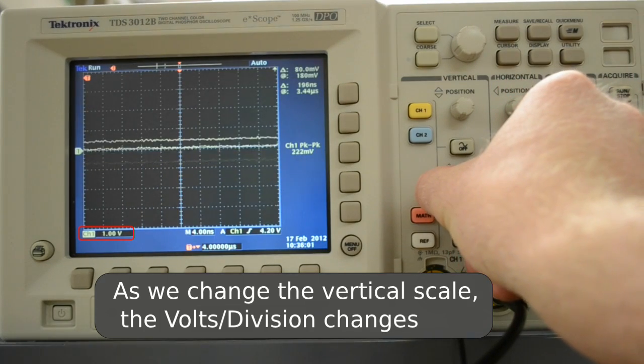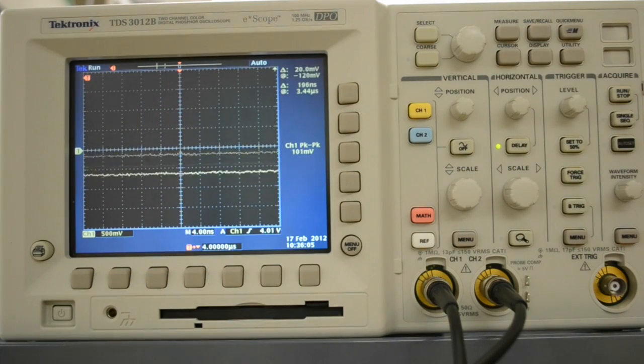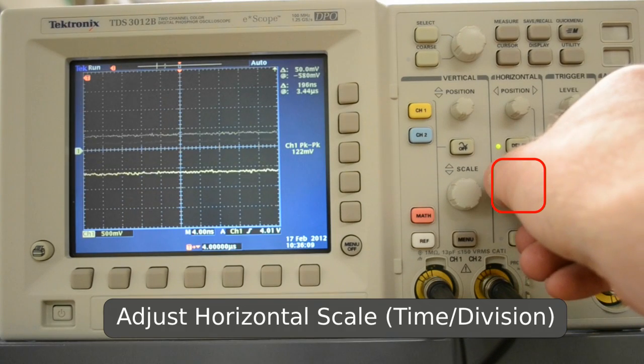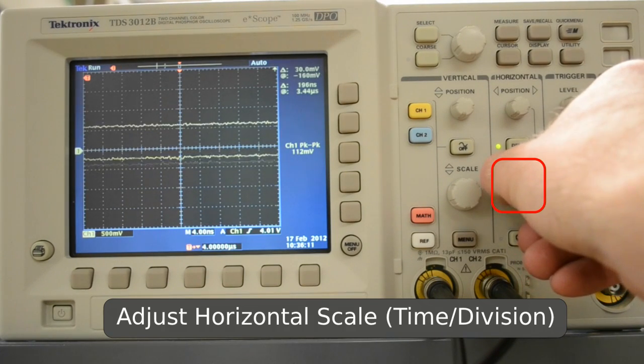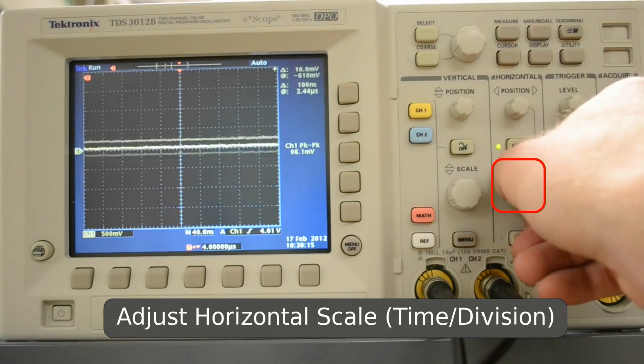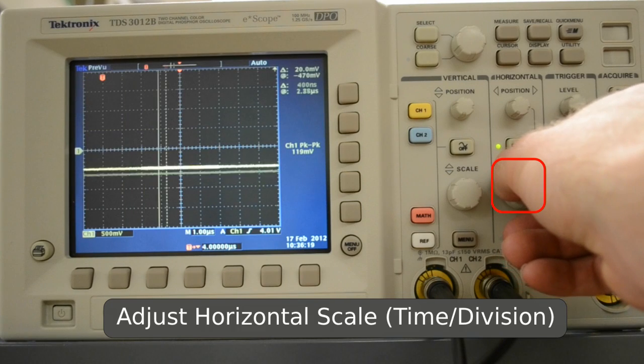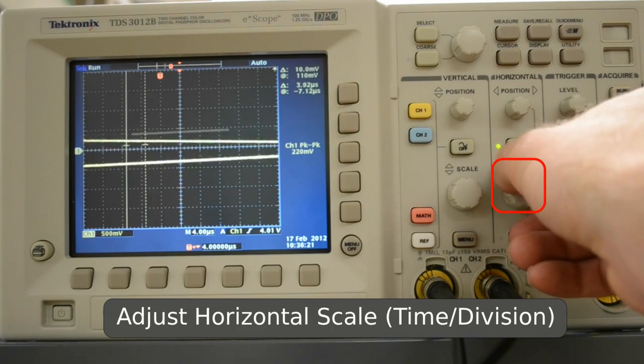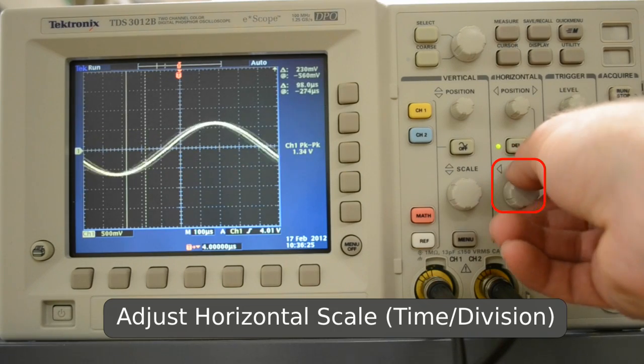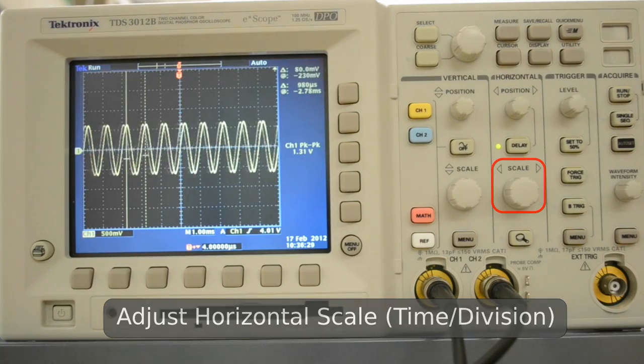So I'll zoom in a bit, and you can see more of what's going on. I'll also adjust the horizontal position or horizontal scale. So now you can see a nice signal.